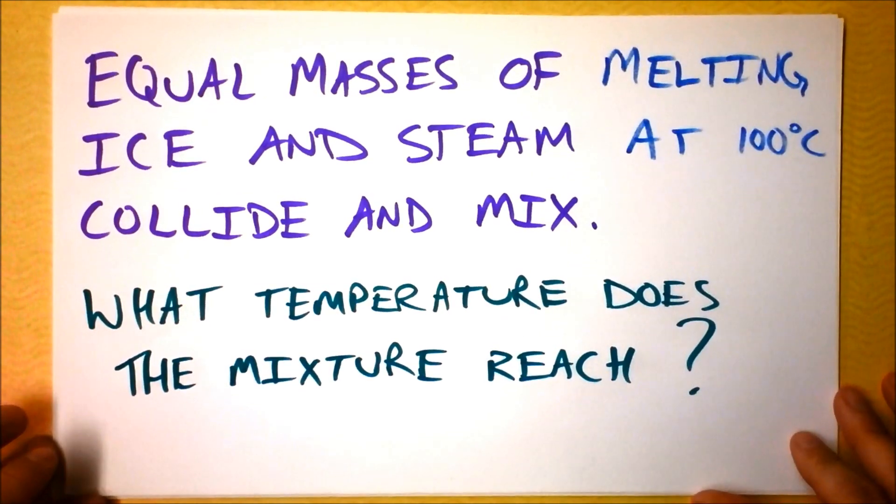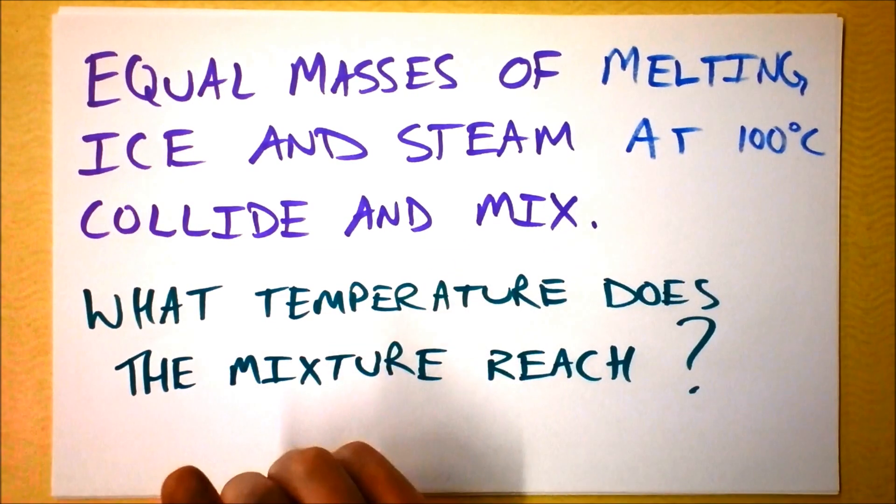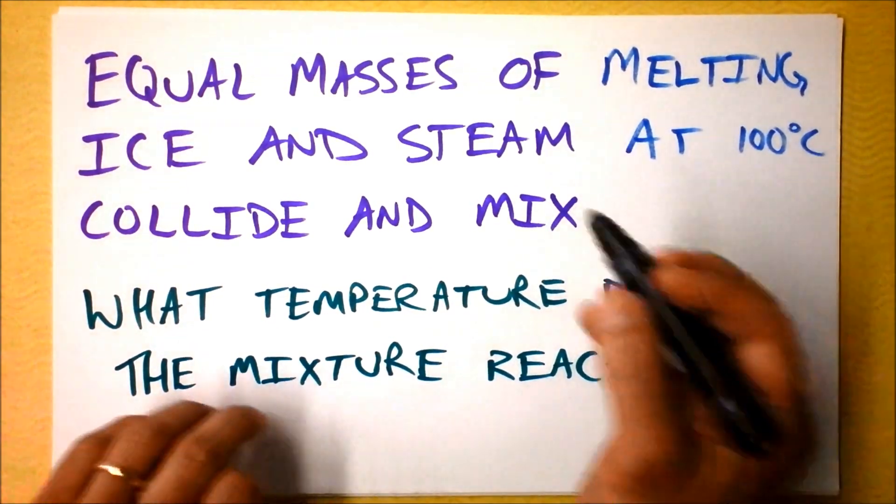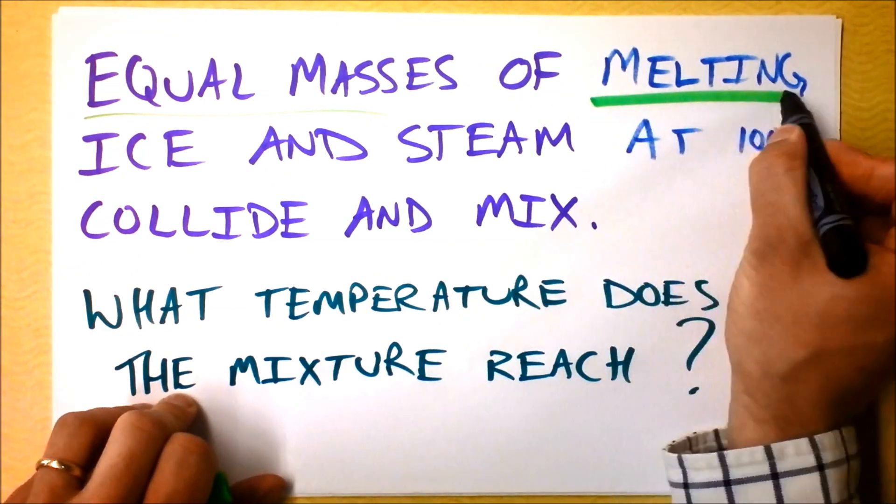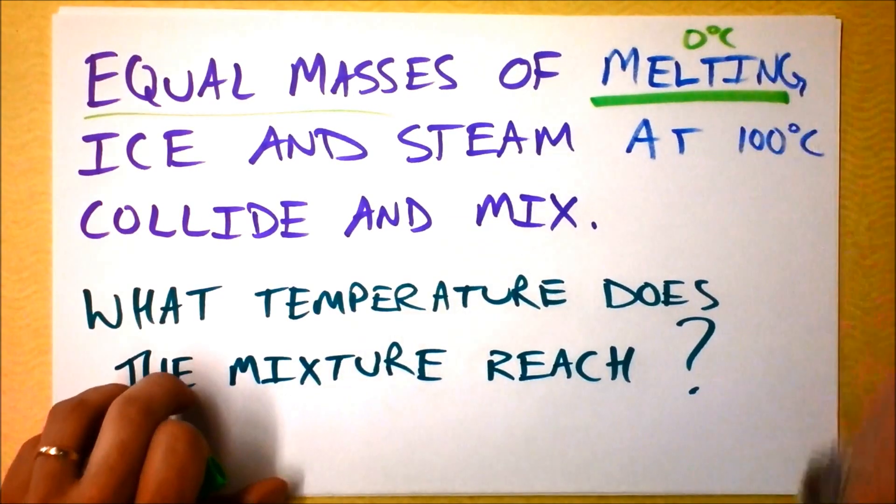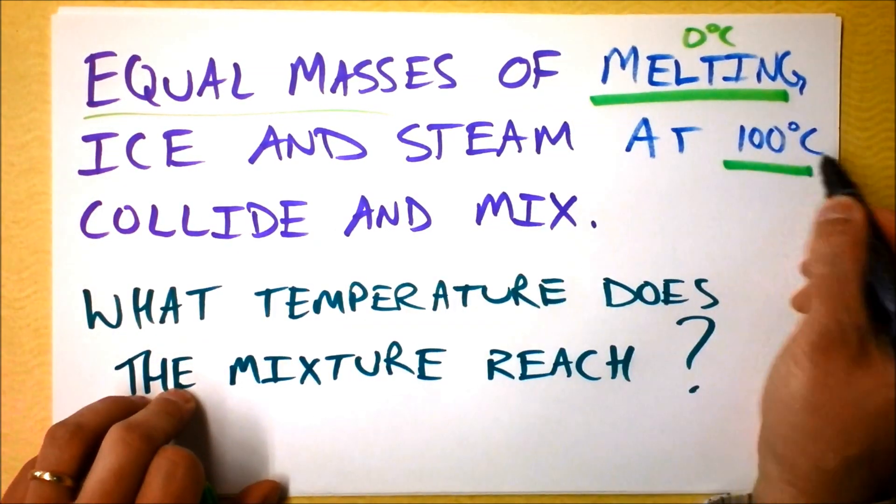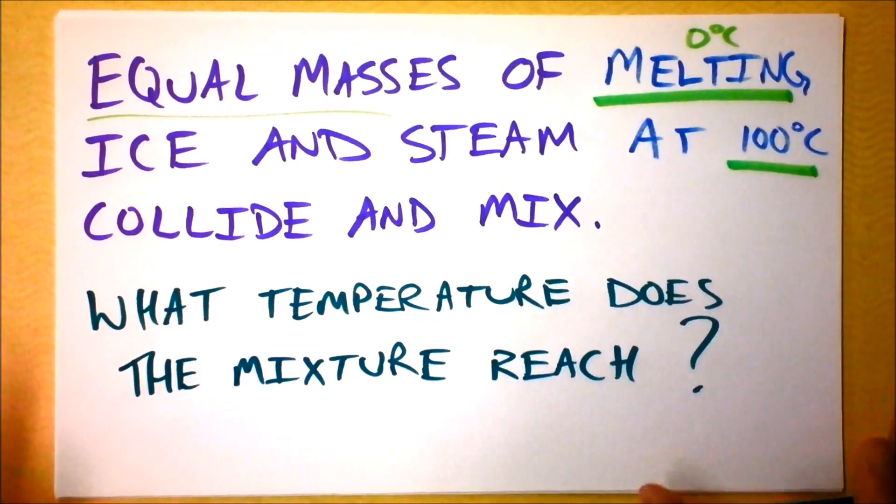It says equal masses of melting ice and steam at 100°C collide and mix. I want you to notice there are two key ingredients they've given to us. First of all, equal mass is important. But notice this is melting ice, which means the ice is at 0°C. And they say the steam is at 100°C.